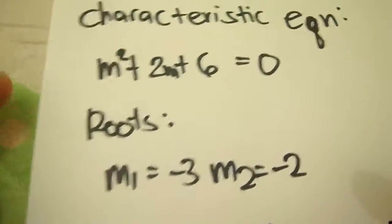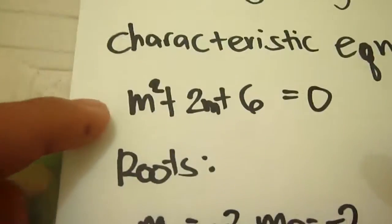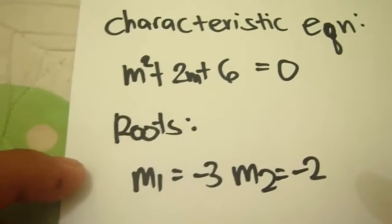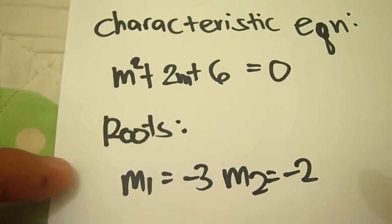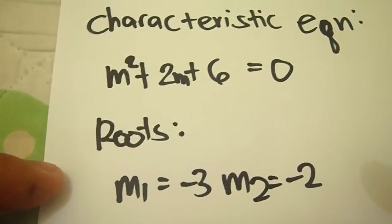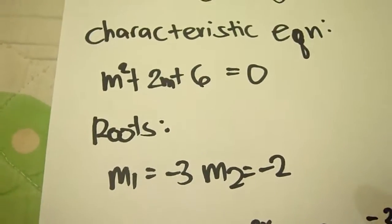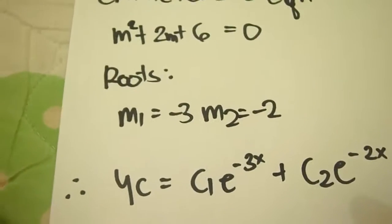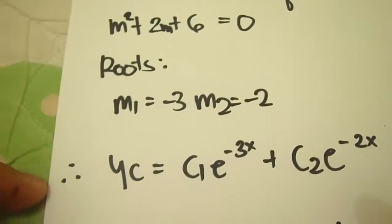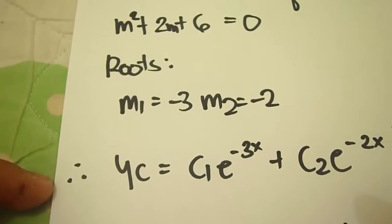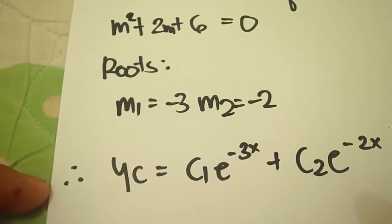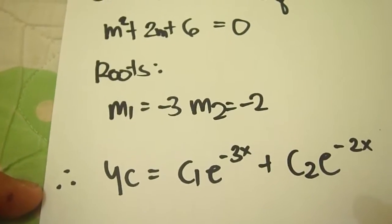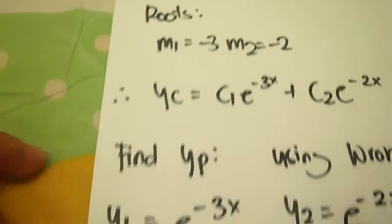After forming the characteristic equation, we find its roots: m1 equals negative 3 and m2 equals negative 2. So now we can write yc, which is c1 e to the negative 3x plus c2 e to the negative 2x.